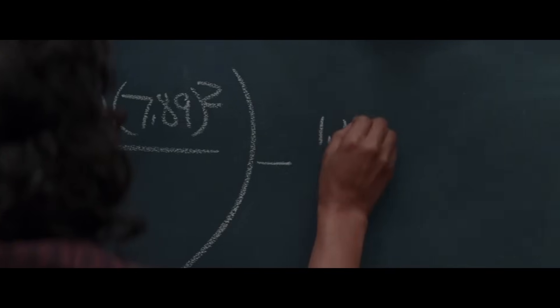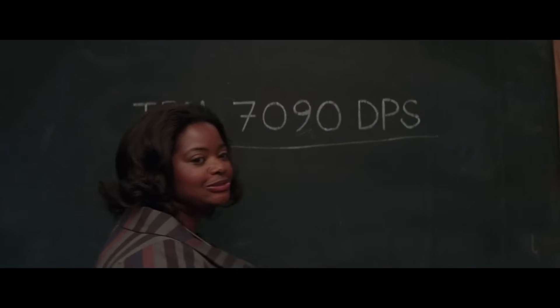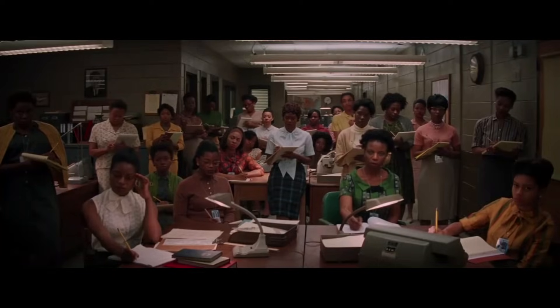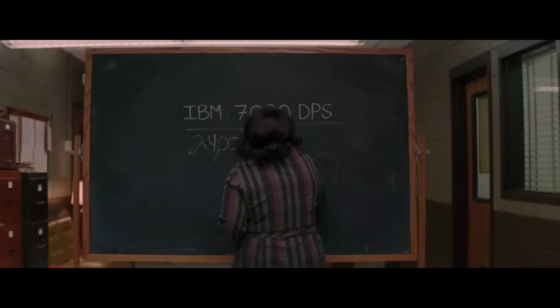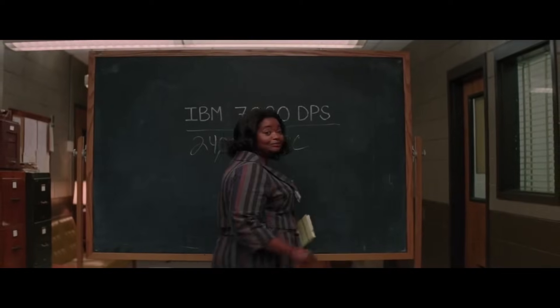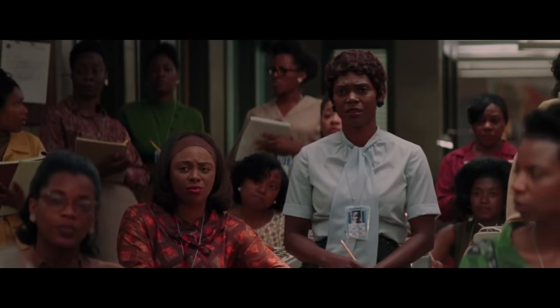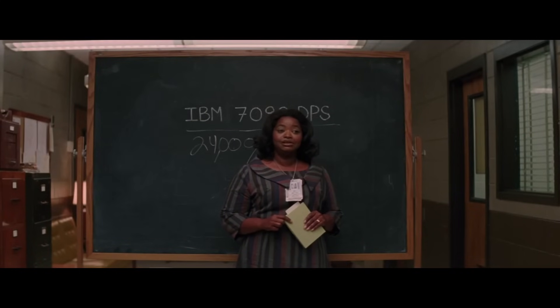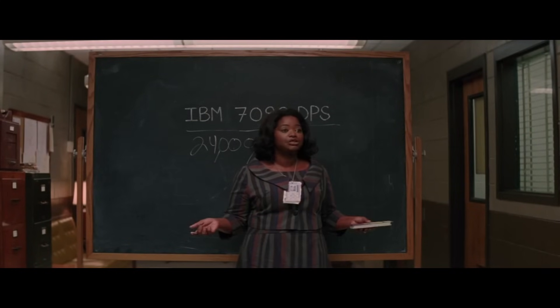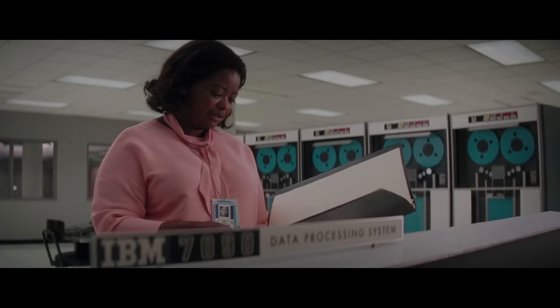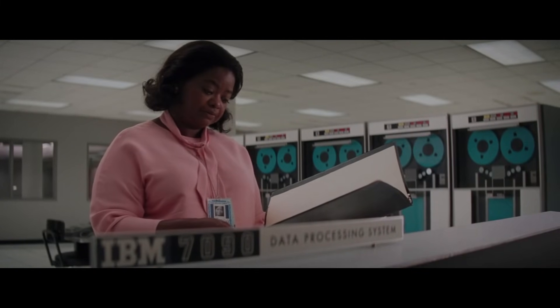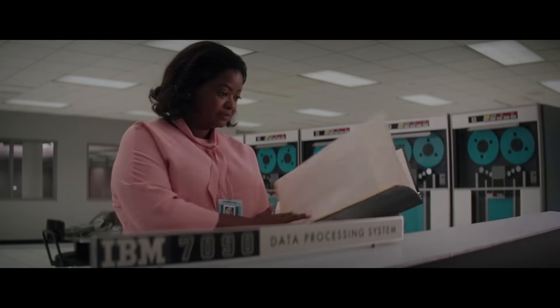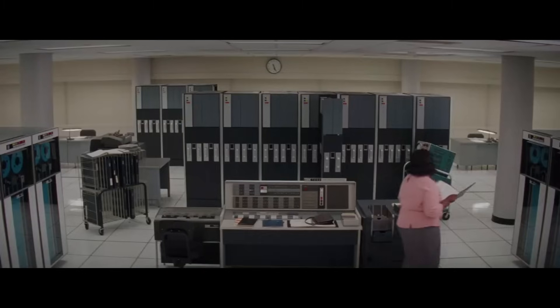The IBM 7090 data processing system. It has the capability of solving over 24,000 multiplications per second. Holy Moses, that's lightning fast. They'll never get that to work. It'll run eventually. And when it does, we have to know how to program it — unless you'd rather be out of a job. The computer uses it as its high-speed storage unit and information holding device. So you have a brain. That I can work with.